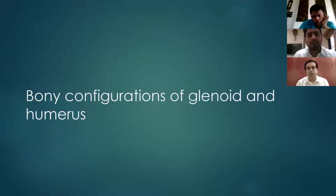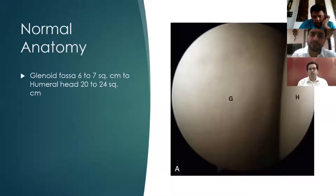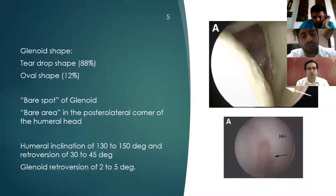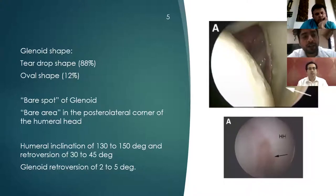There is a large mismatch between the glenoid fossa and the humeral head. The glenoid fossa is around 6 to 7 square centimeters, while the humeral head is around 20 to 24 square centimeters. The shape of the glenoid is either teardrop, also known as pear shape, or an oval shape where the cranial and caudal diameters are similar. In the center of the glenoid, there is a physiological thinning of the cartilage known as the bare area, but it should not be confused with a cartilage defect.